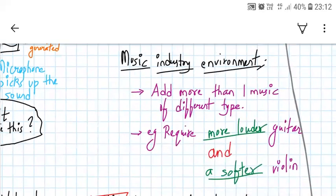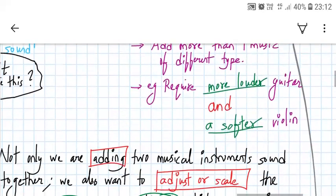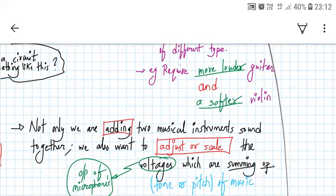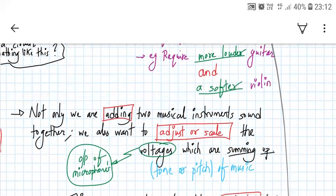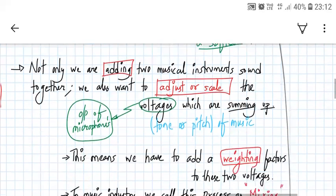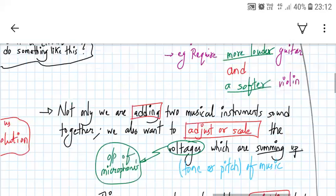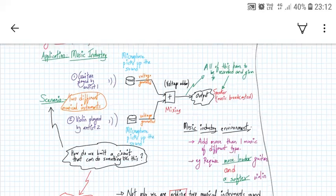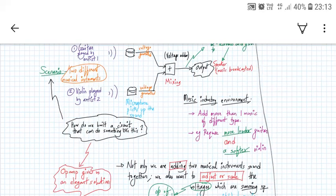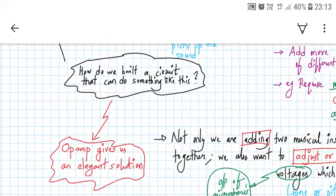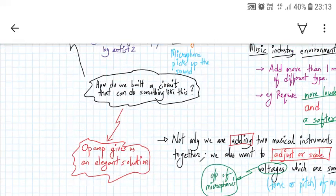In this scenario we require a louder guitar and a softer violin to be added together. So not only are we adding two instrument sounds, we also want to adjust or scale the voltages being summed. This means adjusting the tone or pitch in musical terms by adding a weighing factor to the two voltages — a process called mixing in the music industry. A simple and elegant solution is the op-amp, which motivates our study of voltage adders.